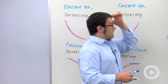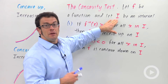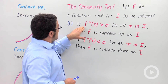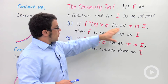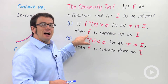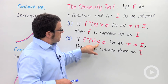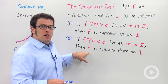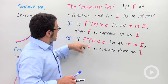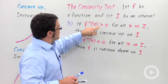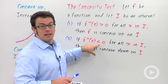And that's where the concavity test comes in. If you have a function f and i is some interval in its domain: if f double prime is positive on an interval for all x in that interval, then f is concave up on that interval. And if f double prime is negative, then f is concave down. So whether a function is concave up or concave down depends on whether the second derivative is positive or negative. Positive means concave up; negative means concave down.